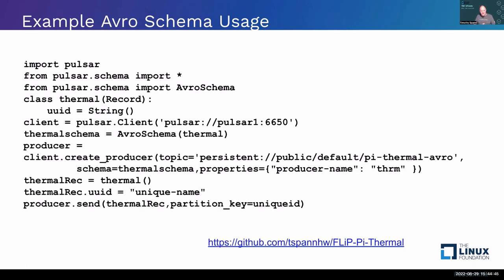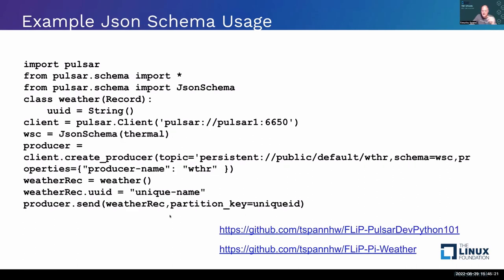Adding a schema is easy in Python. For Avro, just set the class with the field names, types, and whether they're required, wrap it with AvroSchema, and send to a specific topic with a partition key. For JSON, it's the same: define the class, connect, wrap with JsonSchema, and send — including the producer name as a property and the key, which is useful for partitioning, debugging, and deduplication.